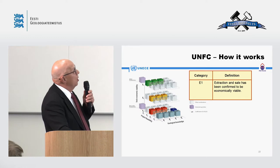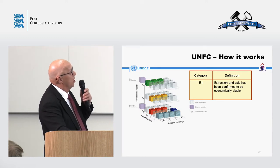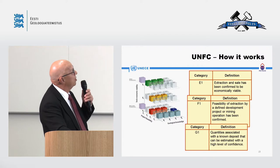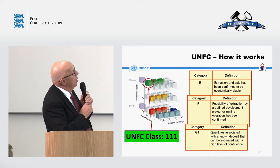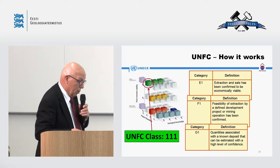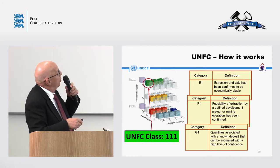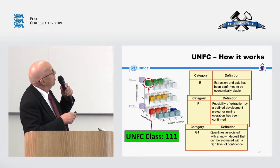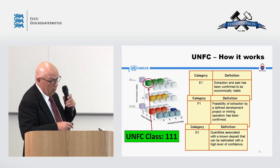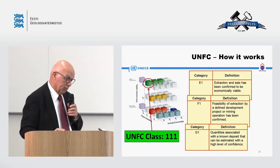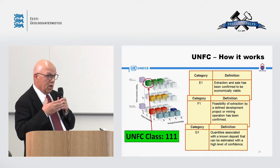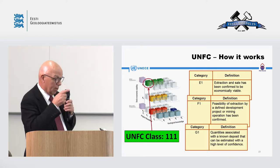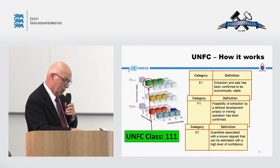To illustrate how this works: if a project satisfies E1, F1, and G1, you end up at UNFC class 1-1-1. If it did not satisfy G1 but satisfied G2, you move to that combination instead. If you always quote in the E, F, G sequence, you will always end up at the same address in the system.